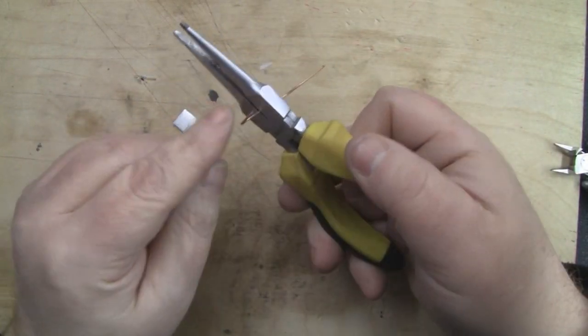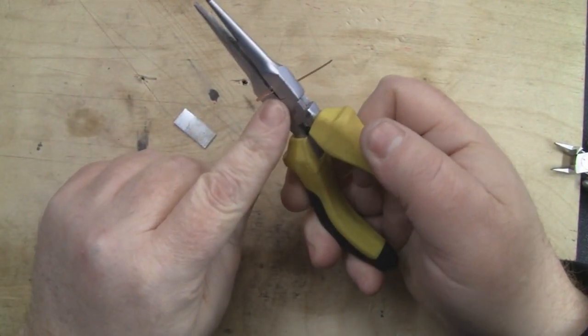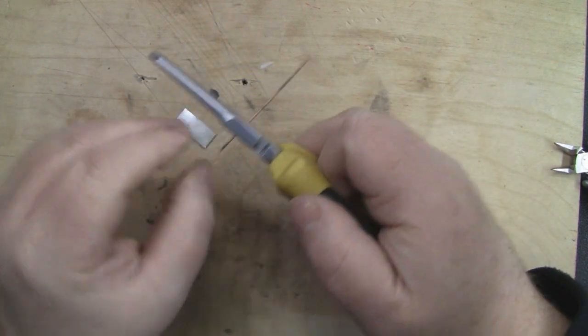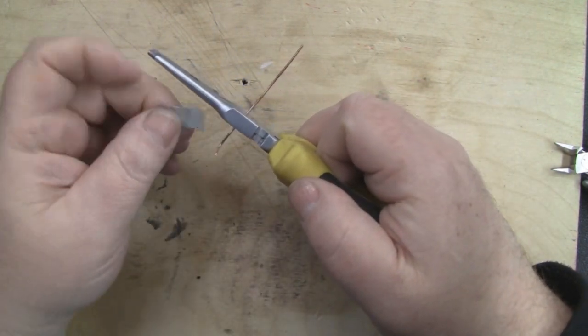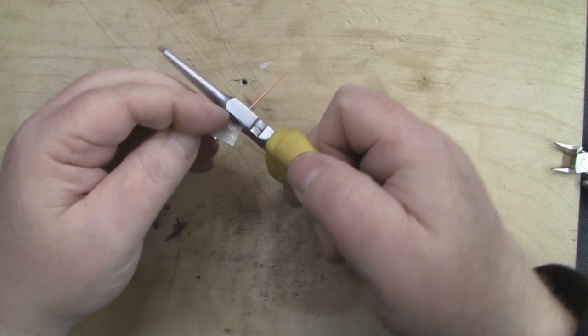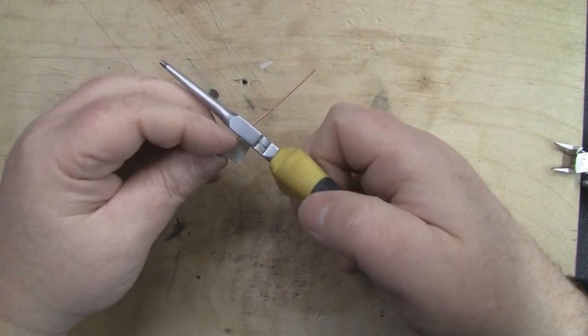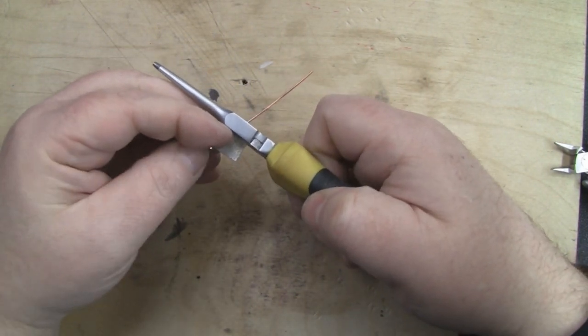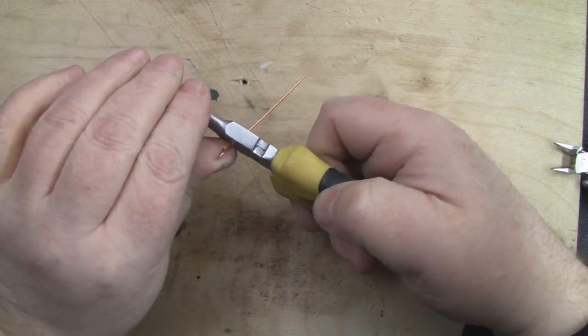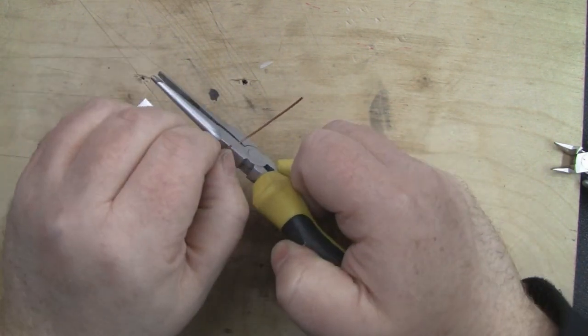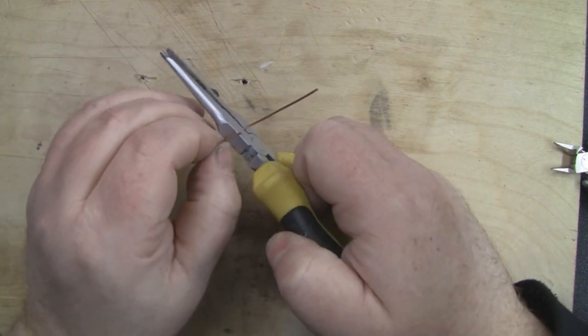Next we take our needle nose pliers - I'm using these, they've got a nice big flat surface area here. Now we're going to use the shim again, measuring on the inside. Butt it up so we've got the right length, and then put another bend in there. Try and keep it nice and straight.